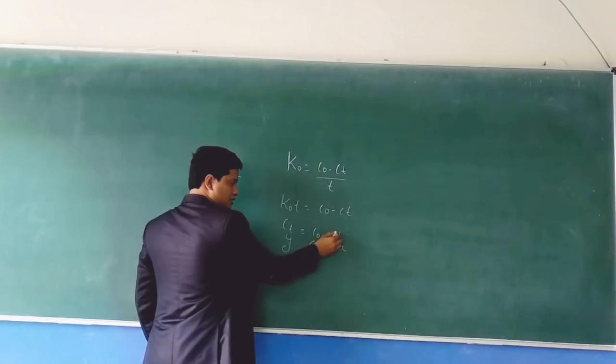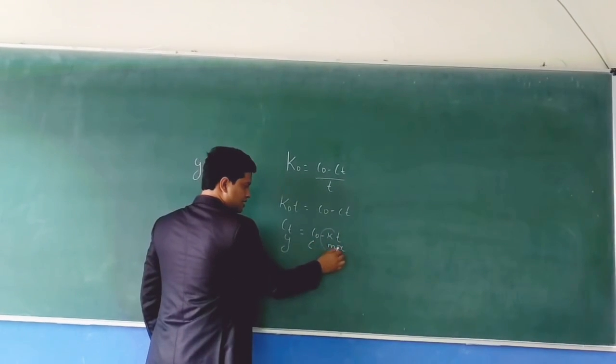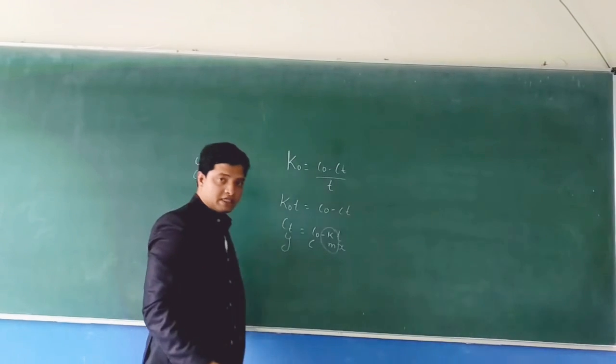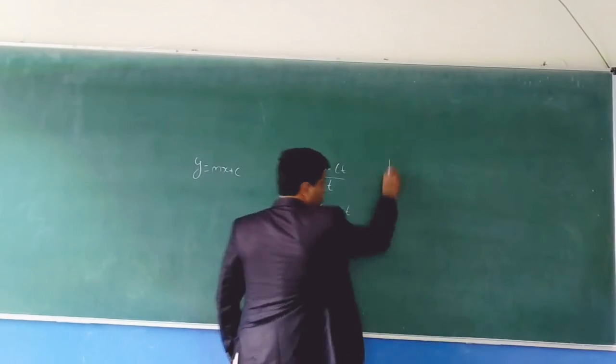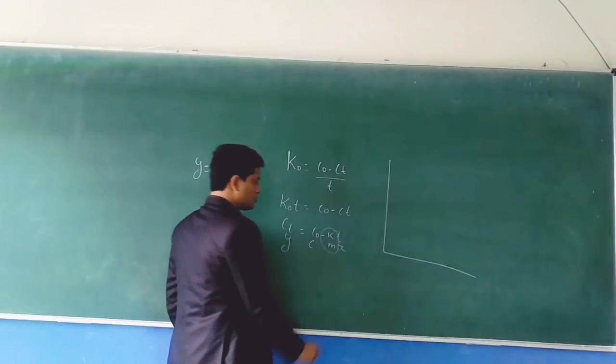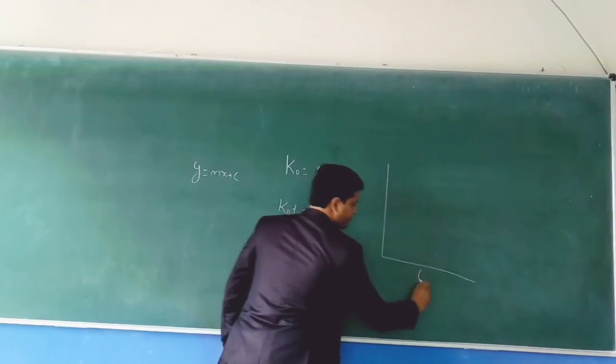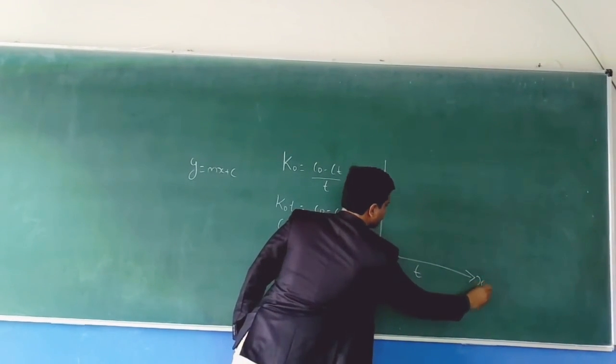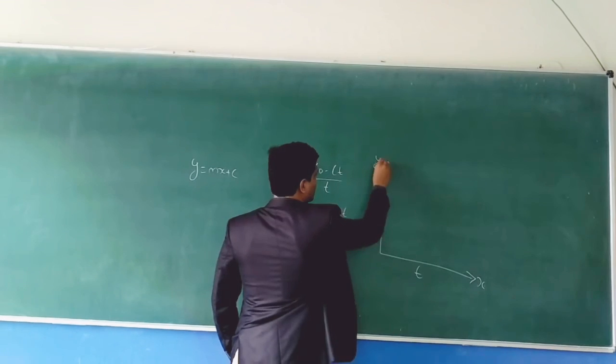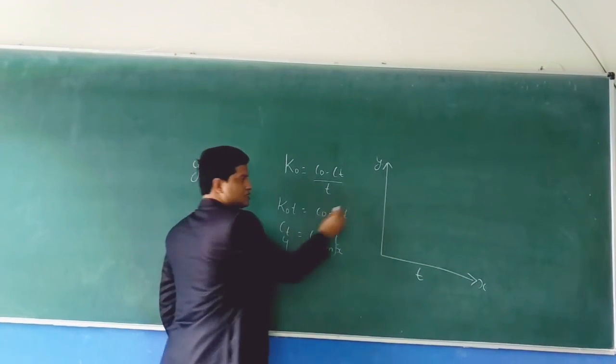Now you can observe that our slope is negative. Since the slope is negative, you get a negative graph. So let's draw the graph. The x-axis is time and the y-axis is Ct.